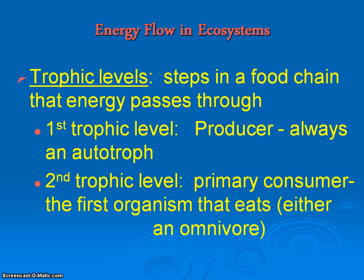The second level is going to be the primary consumer. The primary consumer is the first consumer — usually insects, small rodents, small mammals, rabbits — those types of organisms are going to be the first ones to get to the food source once it's been converted into a usable form.